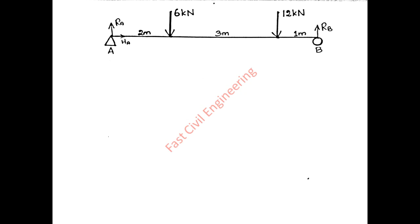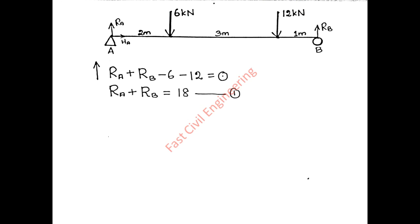Example 1: A simply supported beam with two point loads — 6 kN and 12 kN. We need to find support reactions RA, HA, and RB using three equilibrium equations. First equilibrium equation: summation of vertical forces equals zero. Considering upward reactions as positive: RA plus RB minus 6 minus 12 equals zero, giving us RA plus RB equals 18. This is Equation 1.